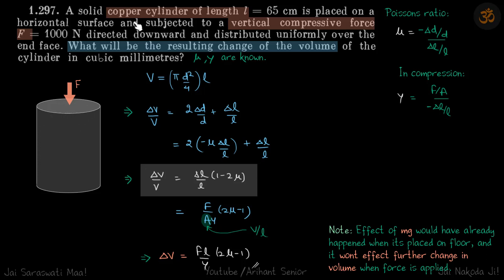We have this solid copper cylinder and on top of that we are compressing it with a force of 1000 Newton. What will be the resulting change in volume for the whole cylinder? Poisson's ratio and Young's modulus are given to us. So we need the change in volume. Let's start with that.